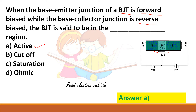If both junctions are reverse biased, no current flows — that is the cutoff state. If both junctions are forward biased, current flows — that is the on state, or saturation. The ohmic region does not apply to BJT; it applies to MOSFET. So the answer is the active region.